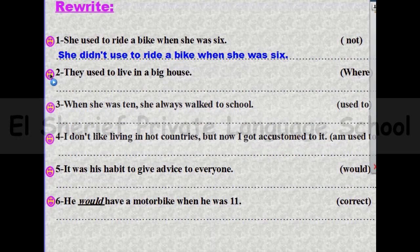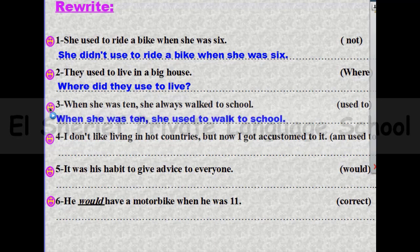Number two: they used to live in a big house — make it a question. The answer will be: where did they use to live? Number three: when she was 10, she always walked to school — use 'used to.' The answer will be: when she was 10, she used to walk to school.